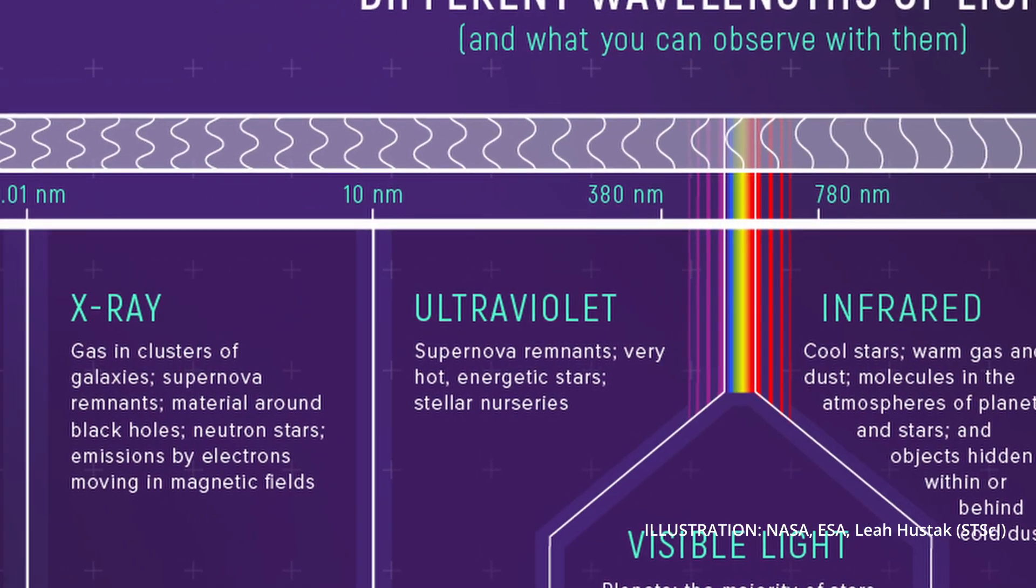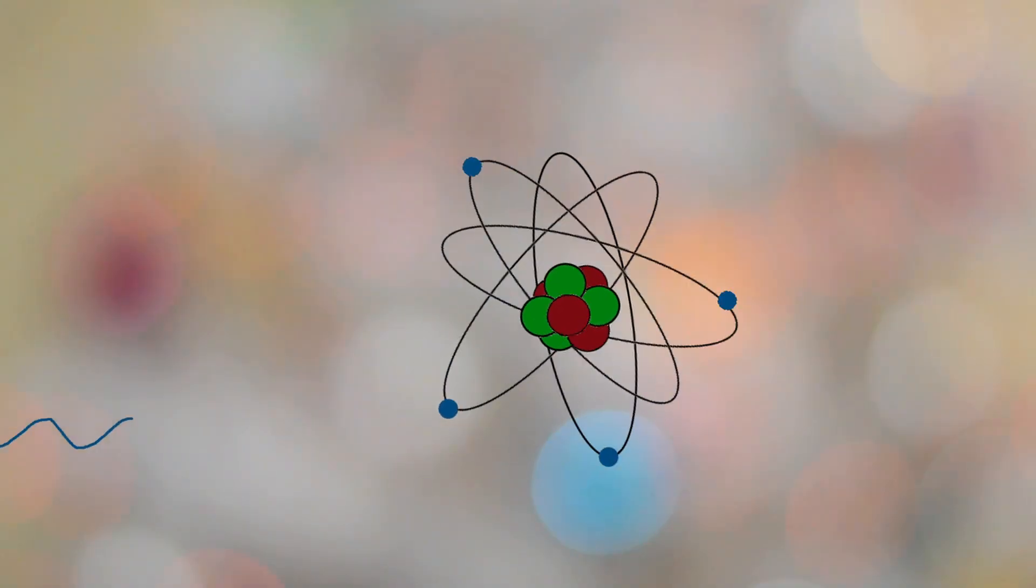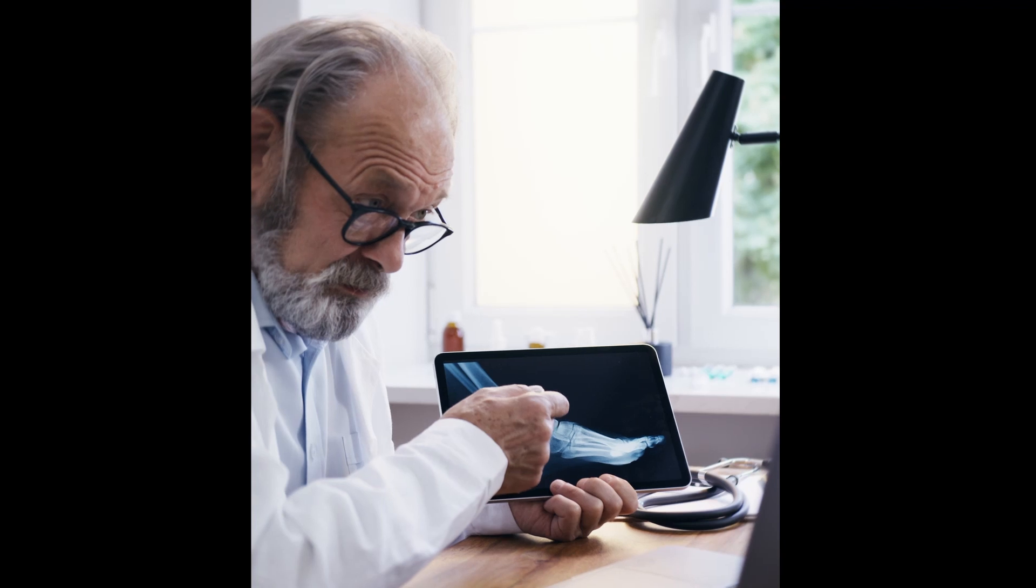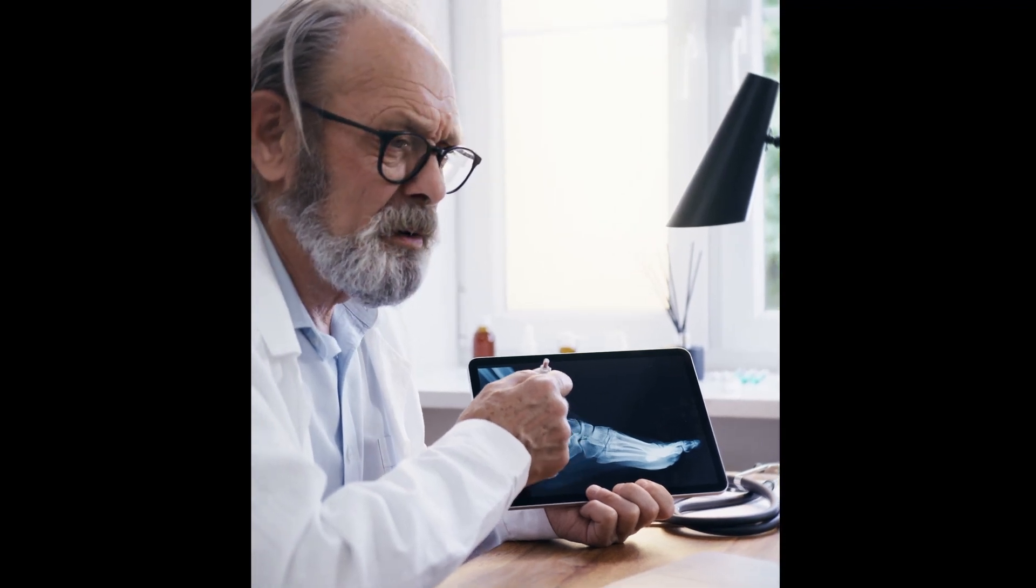Once the wavelengths get shorter again, we start to get x-rays. While x-rays also do have ionization capabilities, with the right set of wavelengths, they can be used in medicine for things like, well, x-rays.